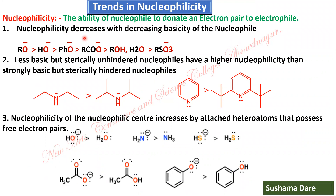What are the trends in nucleophilicity? Nucleophilicity is the ability of a nucleophile to donate an electron pair to an electrophile. The first trend: nucleophilicity decreases with decreasing basicity of the nucleophile. In the series alkoxy, hydroxy, phenoxy, carboxylate, alcohol, water, and sulfonate — the nucleophilicity goes on decreasing. In each of these donor molecules, the donor atom is oxygen, but the nucleophilicity decreases due to different effects on the oxygen.